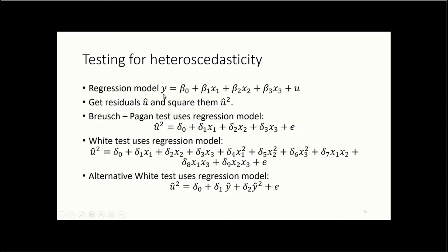For the original regression model — y on x1, x2, x3 — we estimate the model and get the residuals u-hat, then square them. The Breusch-Pagan test regresses u-hat squared on the original variables x1, x2, and x3. Under the null hypothesis, we do not want this regression to have explanatory power — we expect insignificant coefficients and a very low R-squared, meaning the independent variables do not explain the squared residuals.